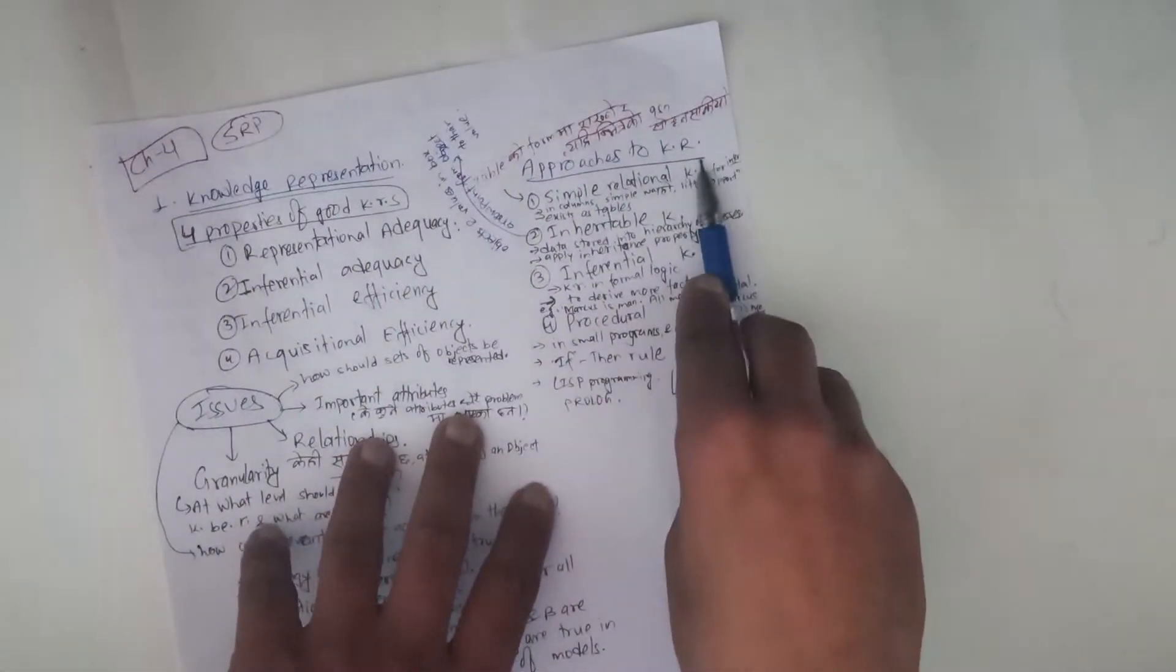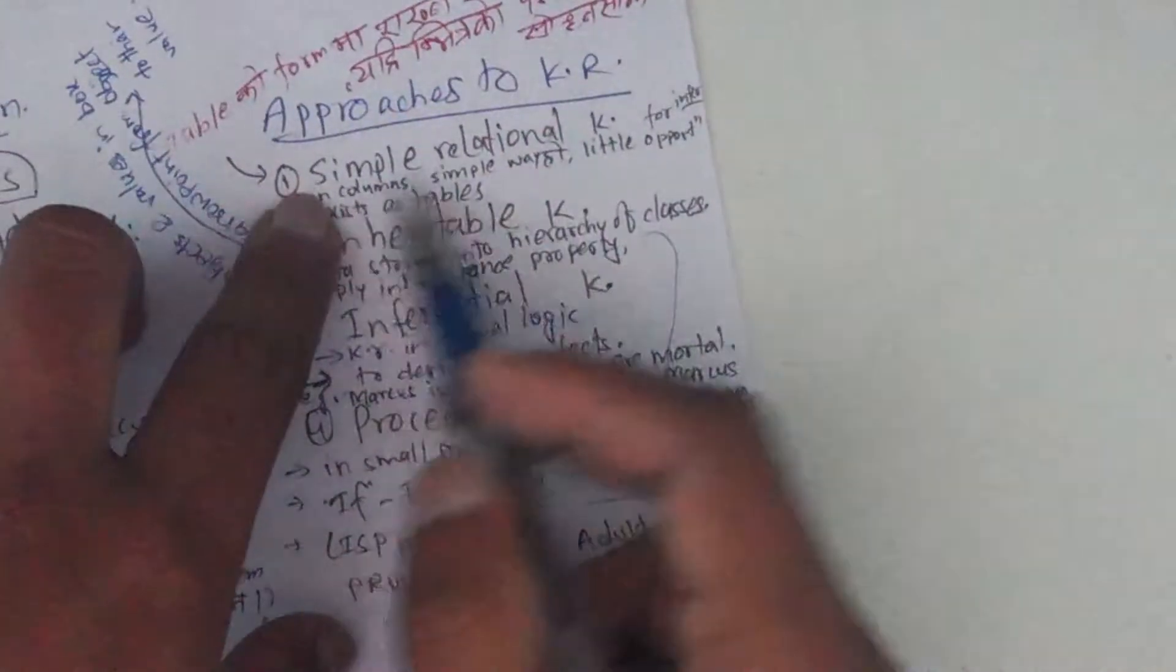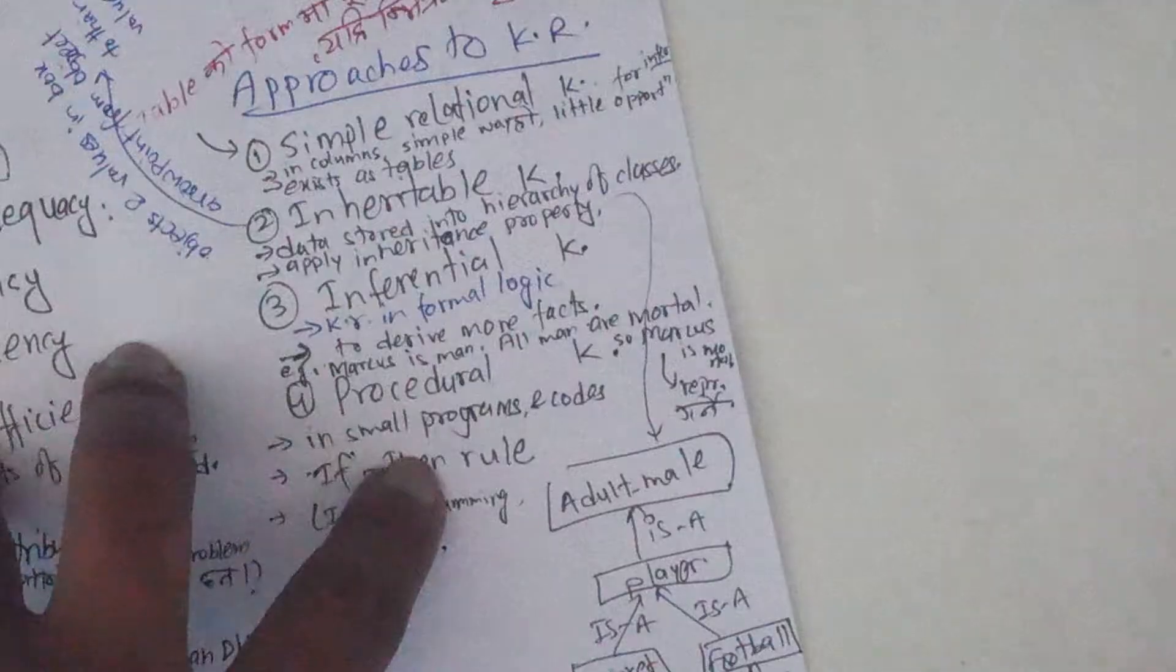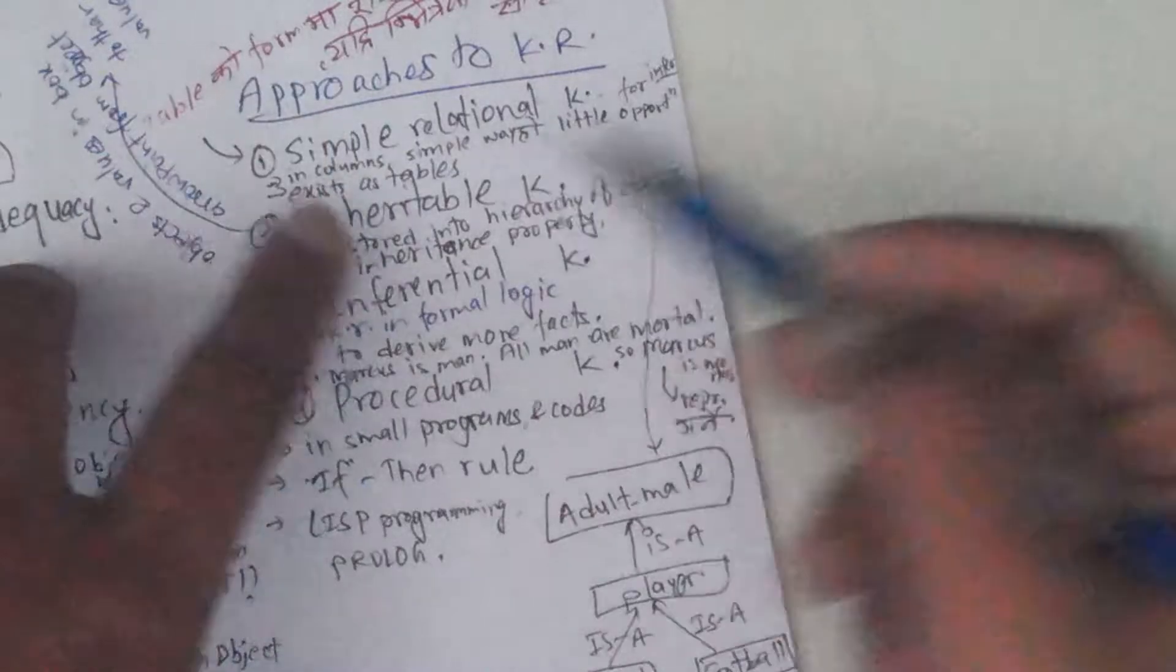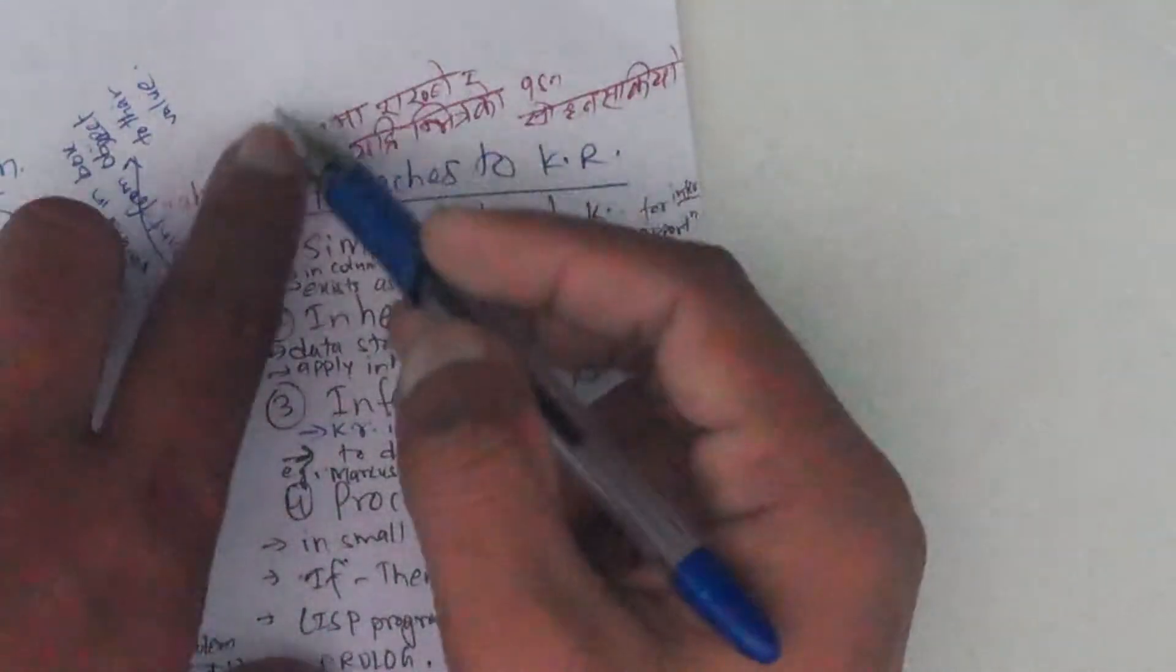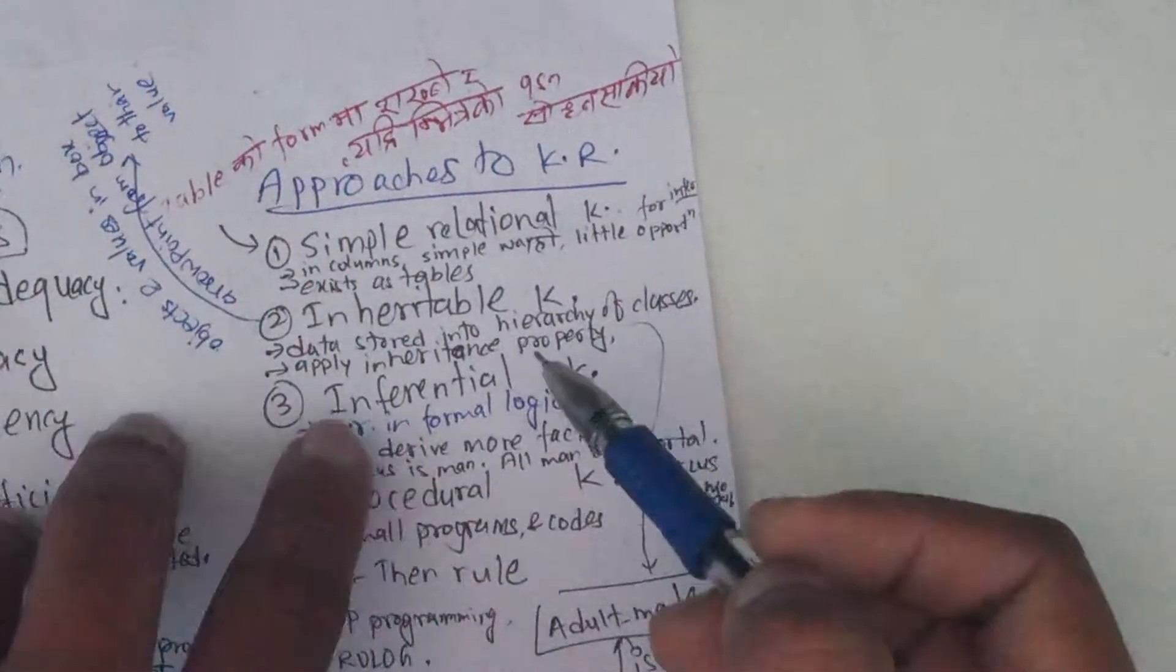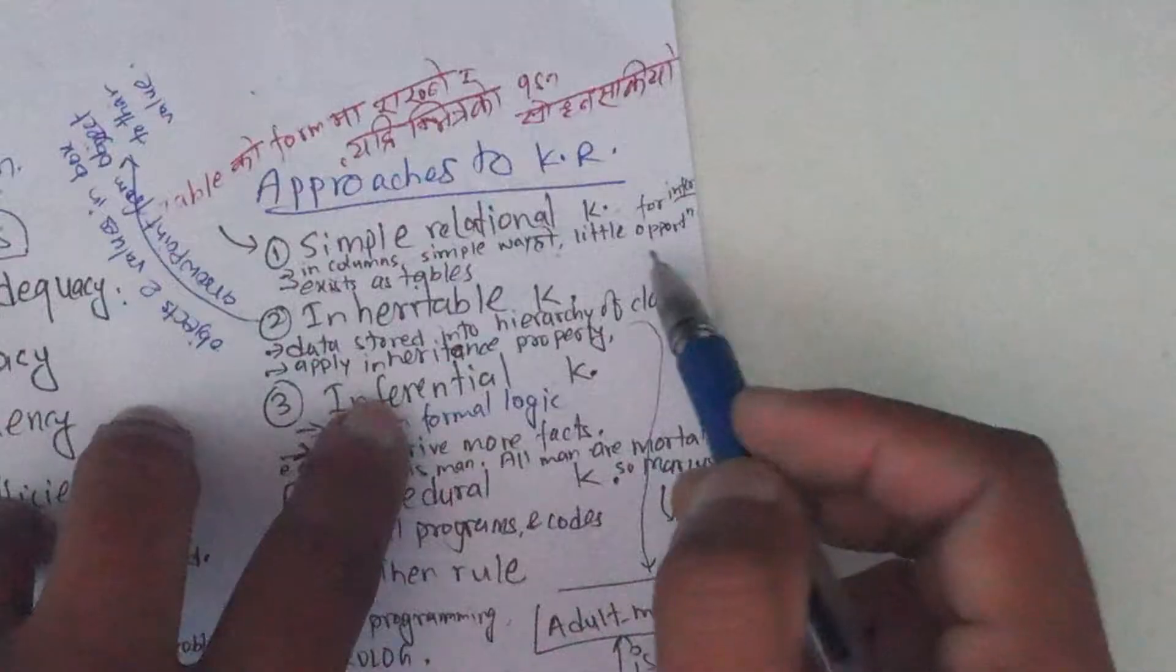Now let's see approaches to Knowledge Representation. The approach I am saying - simple relational knowledge, inheritable knowledge, inferential knowledge, and procedural knowledge. Simple relational data - here we just call them into the column, table, and store. They will check the table, they will get the data, and on that basis they will answer the questions. In the table you can tell the question - who is the player, how old is this? Simple relational knowledge uses tables.